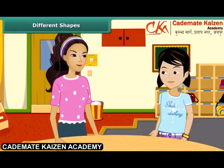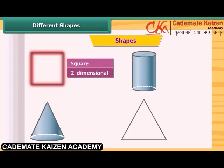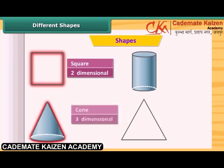Rita, let's play a game now. You know about the two-dimensional and three-dimensional shapes. I will show you some shapes and you will tell me their name and their type. Okay, I am ready. This is a square, and this is two-dimensional. This is a cone, and it is three-dimensional.